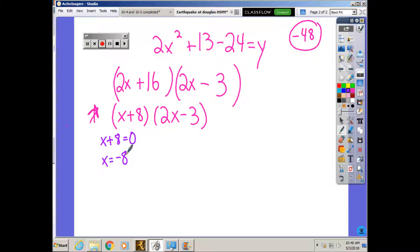My x intercept there is negative 8 comma 0. For my other x intercept...